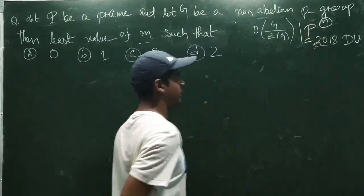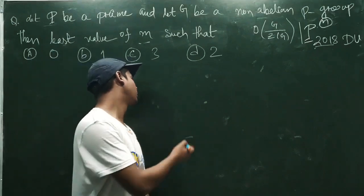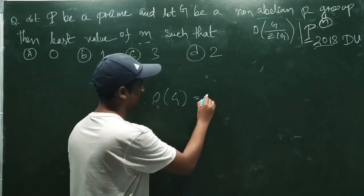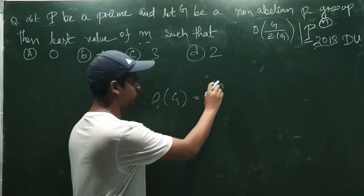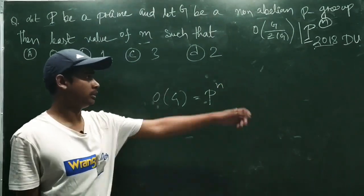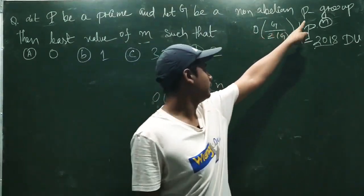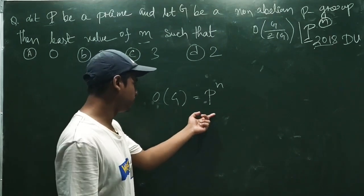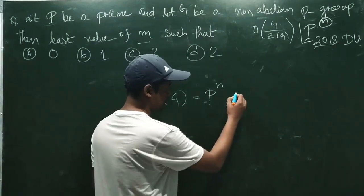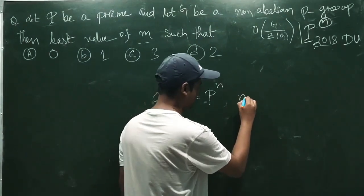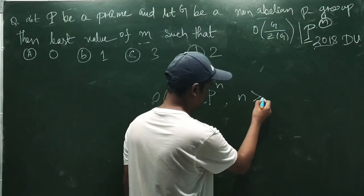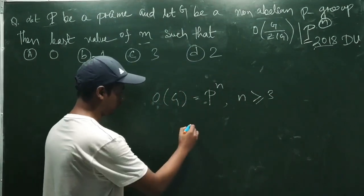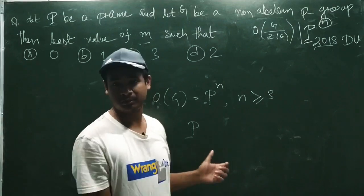Suppose the order of the group equals P to the power n, because it is given a P-group. Now, n must be greater than or equal to 3.